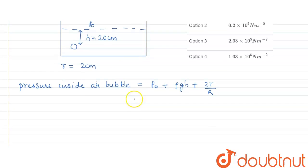Now we know that the atmospheric pressure is 1.01 times 10 to the power 5 pascal plus the density of water is 10 to the power 3, gravity we will take as 10 into height is given 20 centimeter so we will convert into meter so it will be 20 upon 100, plus surface tension is given as 70 into 10 to the power minus 3 and radius is given as 10 to the power minus 2.